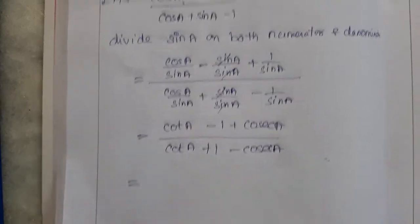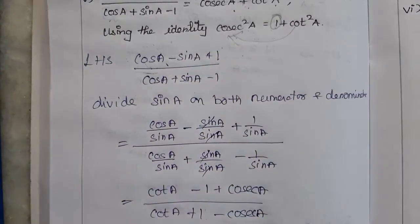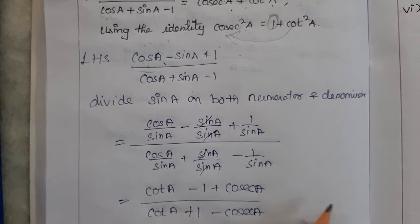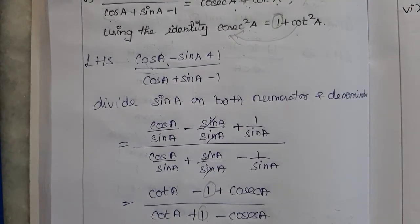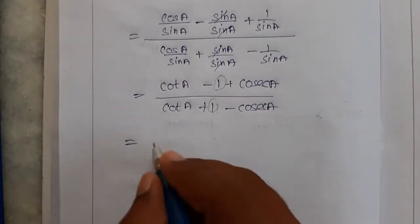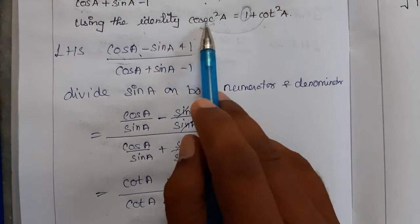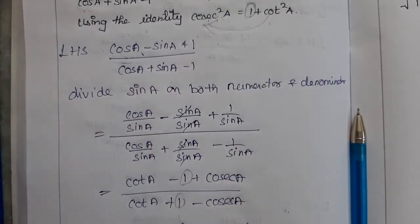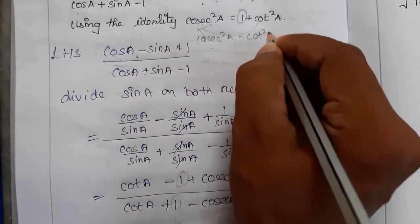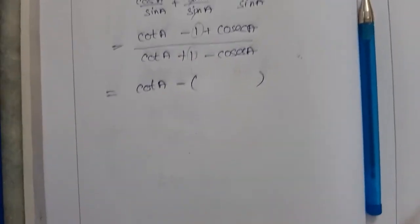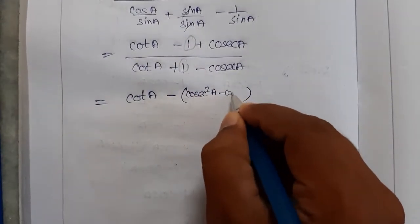Since they said to apply the identity, we represent 1 as cosec squared A minus cot squared A. So instead of 1 in the numerator, we substitute cosec squared A minus cot squared A. The numerator becomes cot A minus cosec squared A plus cot squared A plus cosec A, and in the denominator we substitute the same identity for 1.